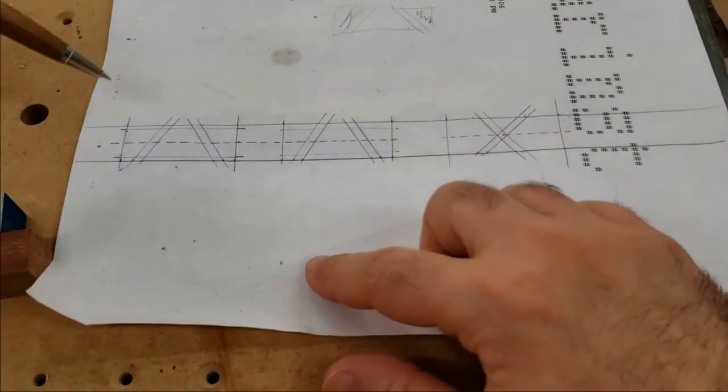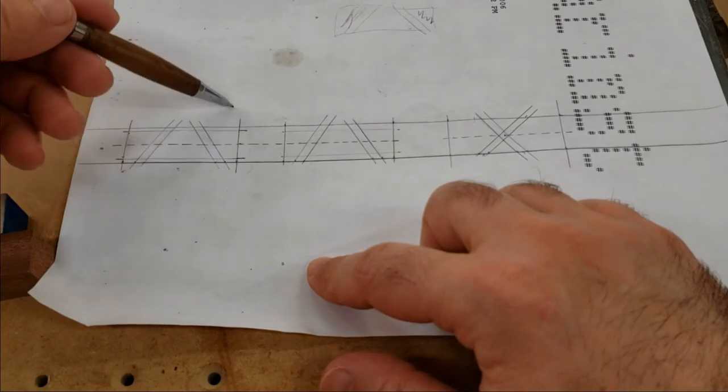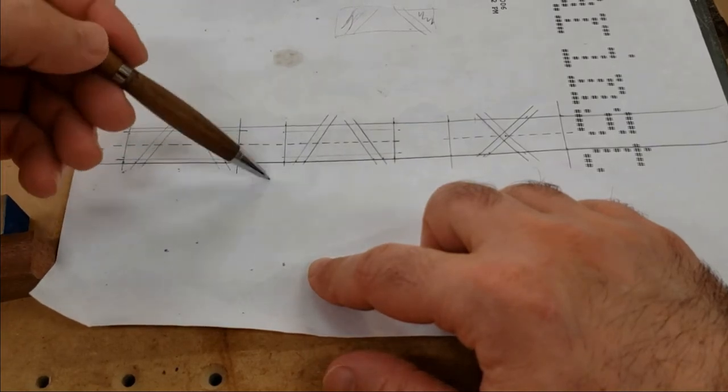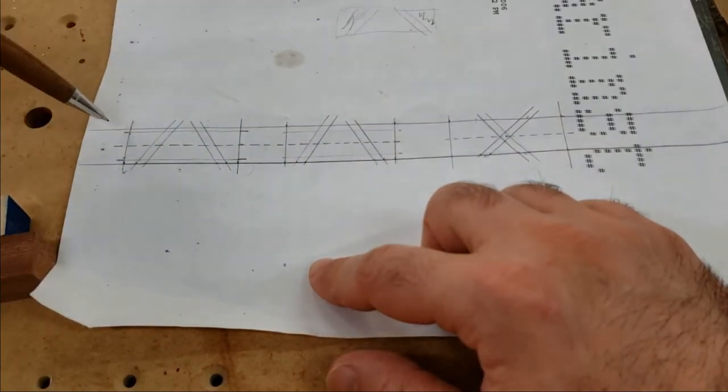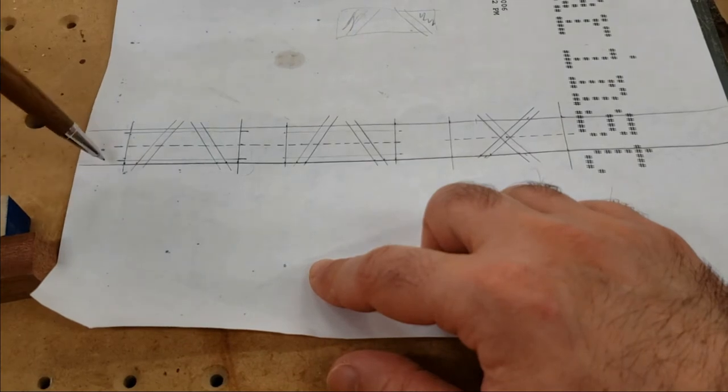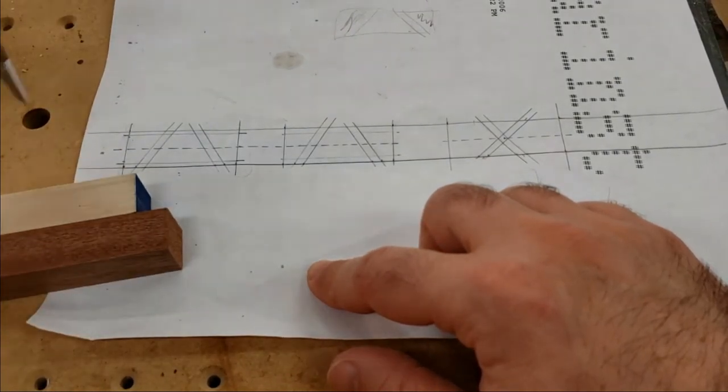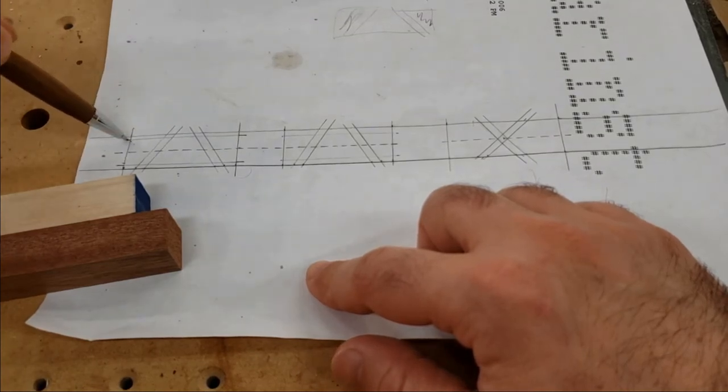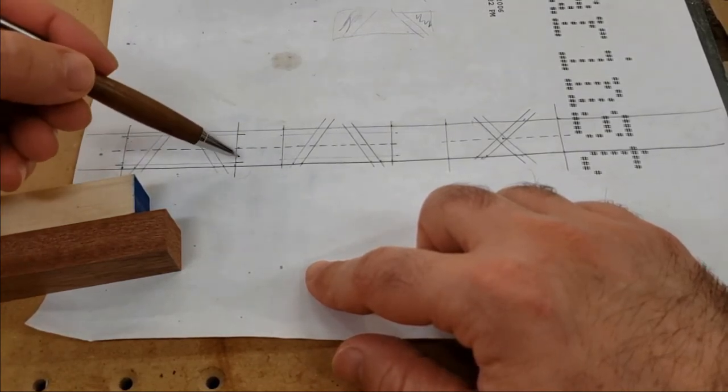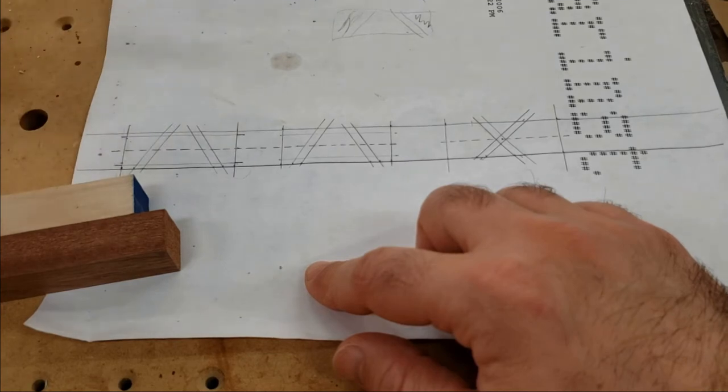Like everything else that I do, everything begins with a layout, and this time the layout is on a piece of paper, so let's see it. Basically, these represent the sizes of the wood that I need. The horizontal lines represent the actual thickness of the wood that I have. And those marks right here represent the outermost edges of the actual finished pen.